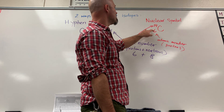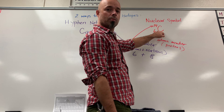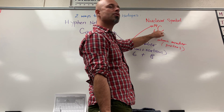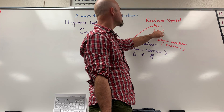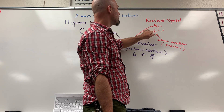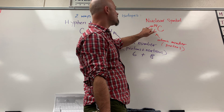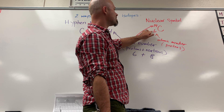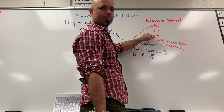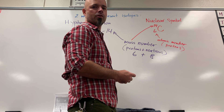With the nuclear symbol, you only use the symbol of the element — since this is an isotope of carbon, you use C — with the mass number on top and the atomic number on the bottom. That's the number of protons. 14 minus six is eight, which gives you the number of neutrons. There you have it: two ways to represent isotopes.